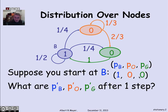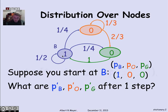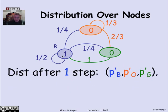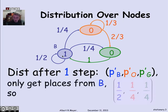I'm interested in the way that these probabilities update. After one step, if P'_B is the probability of being in state B after one step, P'_O is the probability of being in the orange state one step later, and likewise for green — the only place you're at is B. So the only way to get probability of being somewhere is by following an edge out of B. The probability of being at the orange vertex after one step is 1/4, likewise 1/4 for being at the green state, and 1/4 for staying at the blue state.